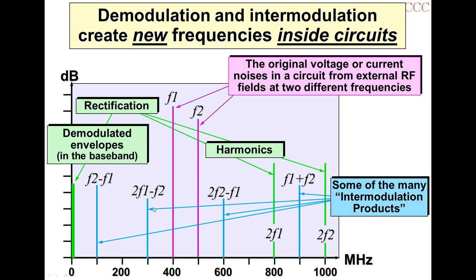Then we would also see 3F1 minus F2, 3F1 minus 2F2, 3F2 minus F1, 3F2 minus 2F1, and so on. Each time you go up an order — second harmonic intermodulating, then third, fourth — the levels drop down a bit. Here's a simulation of a perfect diode fed through a 1 kΩ resistor, fed with two RF signals at 850 and 875 MHz. In a linear circuit, that's all you'd get — noise and those two spikes.